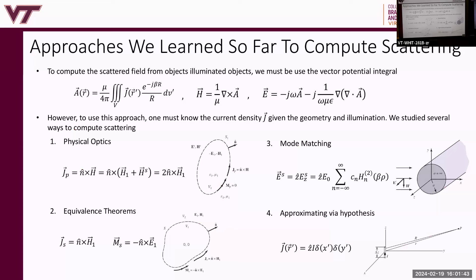So, approaches that we've learned so far to compute scattering — to compute the scattered field from illuminated objects — we must use the vector potential integral. The magnetic vector potential at some observation point r is equal to mu over four pi times the volume integral of J, the current density, multiplied by the Green's function. It's a spatial convolution of the current density against the kernel, which is the Green's function: E minus j beta r over r, where r is the distance between the source and observation points.